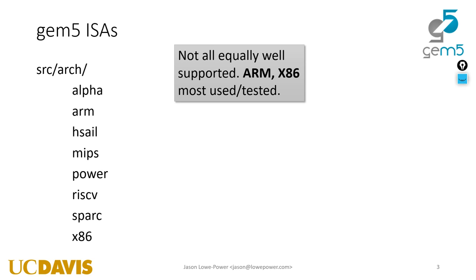Gem5 supports lots of ISAs — doing an ls on source/arch shows about eight different ISAs currently supported, though not all are equally well supported. ARM and x86 are the best supported. X86 is pretty well supported because tons of people use it, though not all x86 instructions are implemented — most SIMD instructions are still not implemented. ARM is really well tested and is probably the most stable ISA because there are people at ARM who use gem5 every single day.